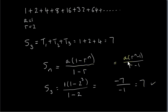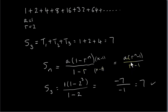Now sometimes this formula is written in a different form. These are identical of course. To go from one form to the other, you just multiply above and below by minus 1. Multiplying minus 1 into the bracket gives minus 1 plus r to the n, and multiplying minus 1 by what's underneath gives minus 1 plus r, which is just r minus 1. So these are identical — some tables have it in one form, other tables have it in the other form, but you'll get the same answer whichever one you use.